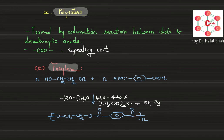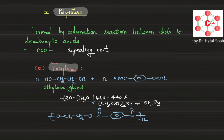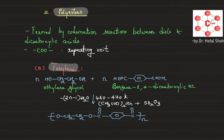Terylene is actually formed by condensation of two different types of monomers. The first one is called ethylene glycol, and the other one is terephthalic acid, also known as benzene-1,4-dicarboxylic acid.